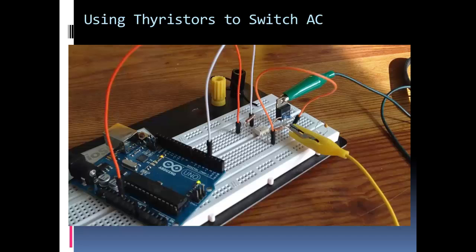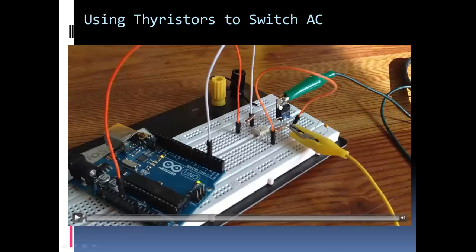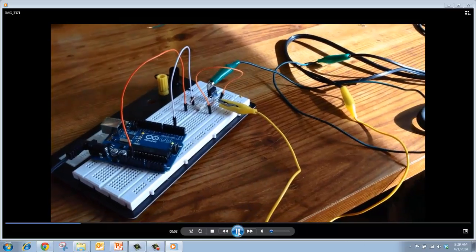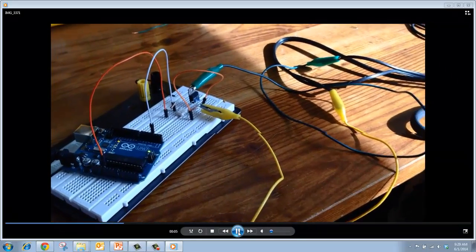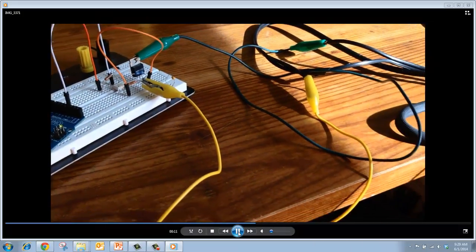So now let's see our triac, opto isolator, and Arduino in action. Here's our setup. Here's our Arduino Uno. Here is the triac. Here's our resistors. And then here's our opto isolator. As you can see, it's white. I'm not quite sure why it's white. Chips are usually black. First white chip I've seen anyway. So there's our circuit. The alligator clips or the jumper wires are connecting the AC light to the triac.